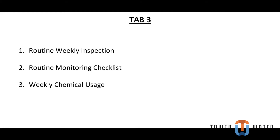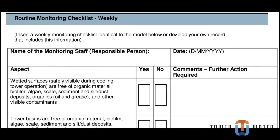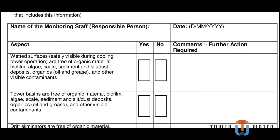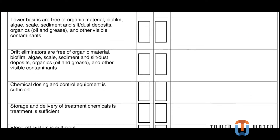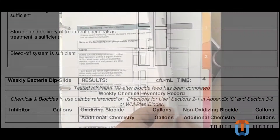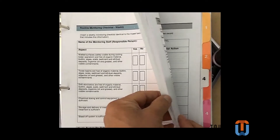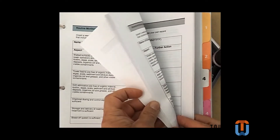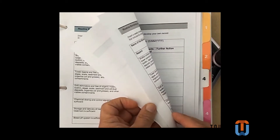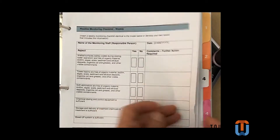Turn to Section 3 of the log binder to find the routine monitoring checklist along with an instructional guide, just in case you forget any of these steps. You will notice that there is one checklist for every week of the year. These sheets must be filled out every 7 days, and even if just one of them is missing, you will receive a violation.